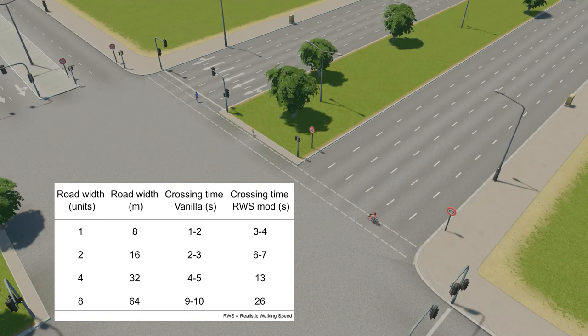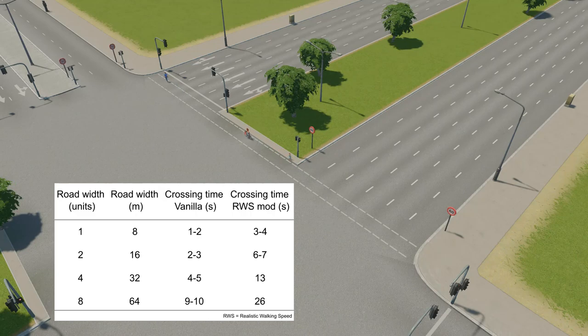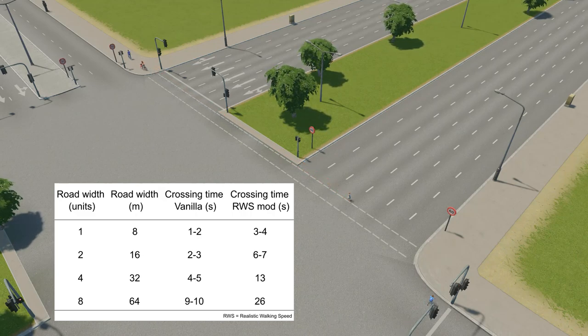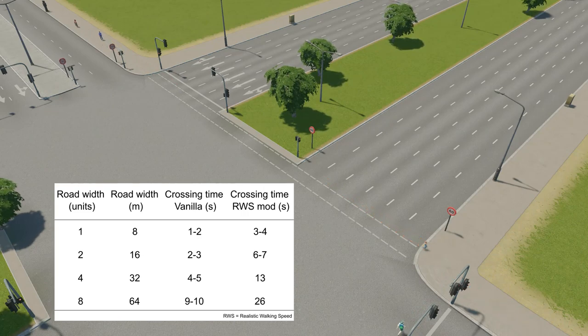Elderly sims have the slowest walking speed. This table shows how long it takes them to complete a crossing of streets of different widths. The main point is that you really want to use narrow streets in areas where you have a lot of pedestrians to minimise the need for long clearance intervals.